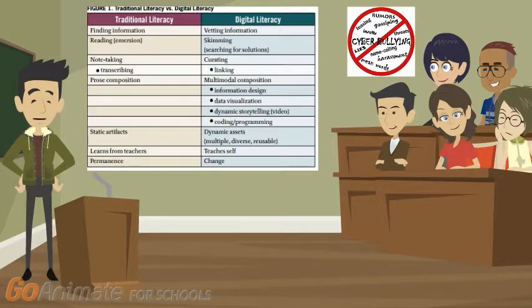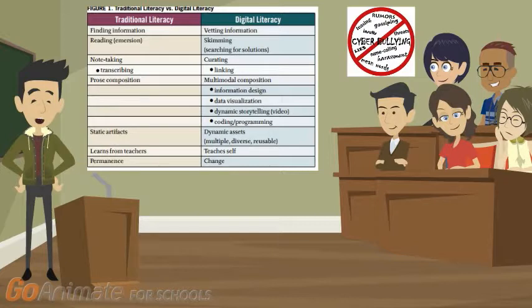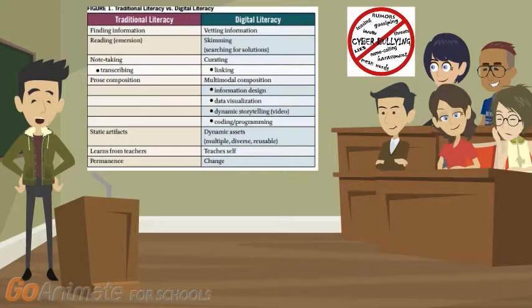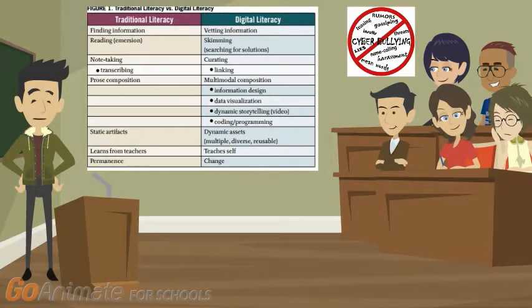This chart is going to talk about the difference between traditional literacy and digital literacy. A few examples are, back when you were reading out of an encyclopedia, the information was already vetted. Nowadays when you read online, you have to make sure the information is vetted and accurate. Before you would read; now you're skimming.